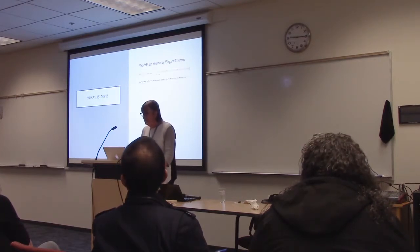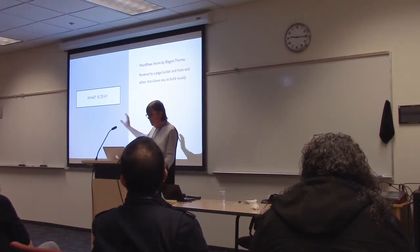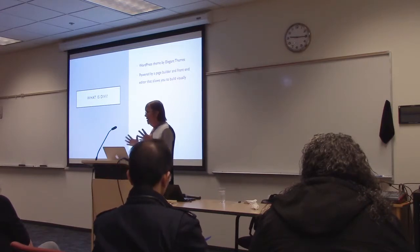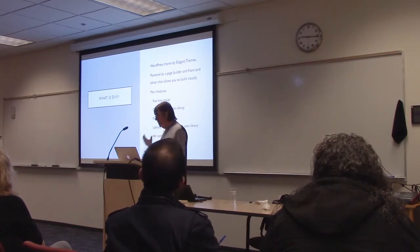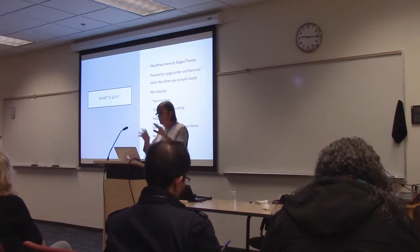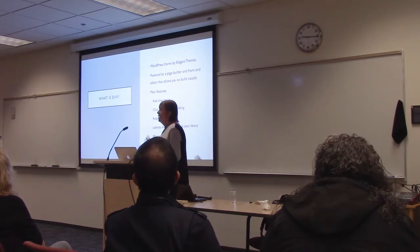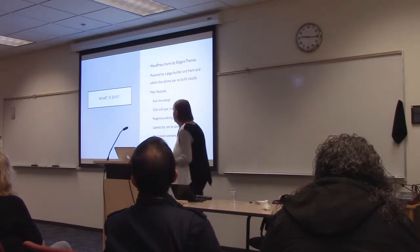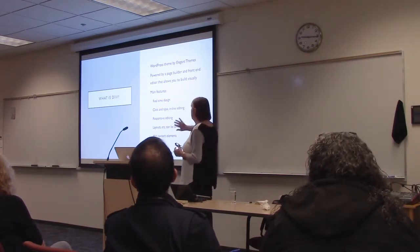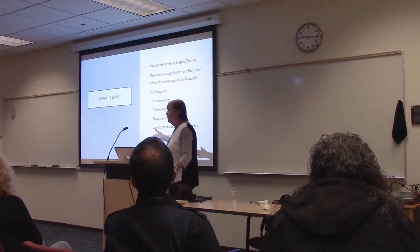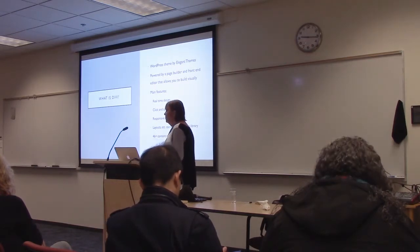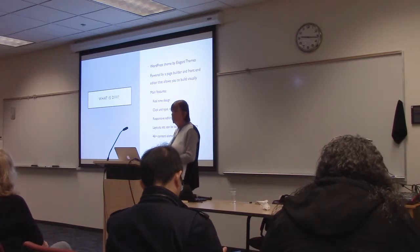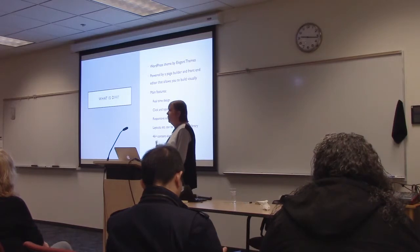So what is Divi? It's a theme by a company called Elegant Themes — they do a lot of stuff, but this is their flagship. It's basically got a front-end editor that lets you change things visually. You can add content, change the design, change formats, and you can see it all happen in real time. It allows you to click and type. It also has responsive editing, so you can have a different font size for a computer, a tablet, and a phone. Layouts can be saved to your library, and it comes with content modules — things like forms, counters, images, photo galleries — these are the modules.